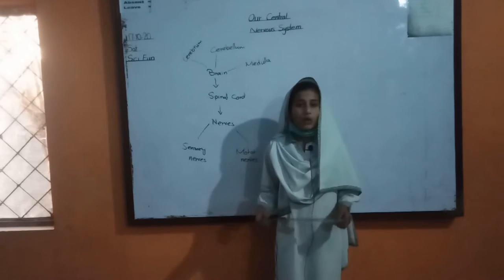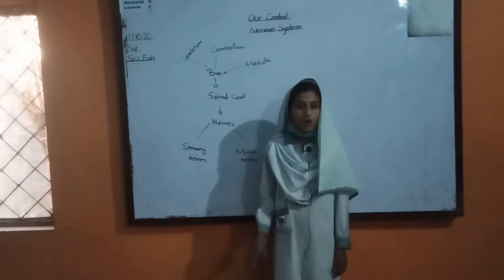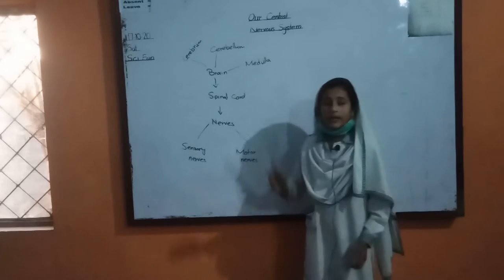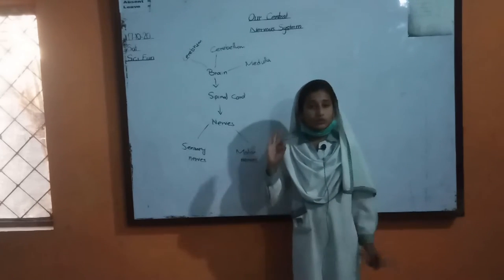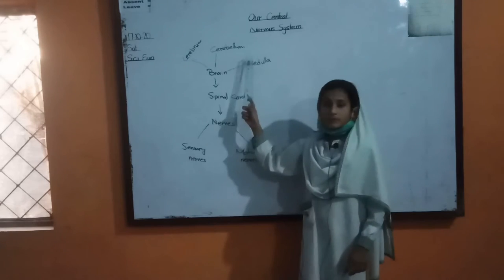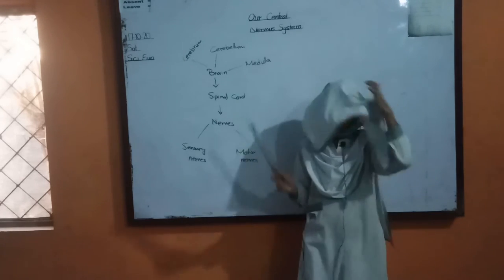When we talk about the nervous system, it means we can talk about our brain. Our brain is divided into three parts: cerebrum, cerebellum, and medulla.